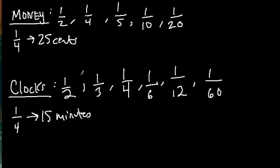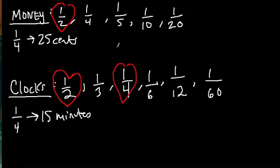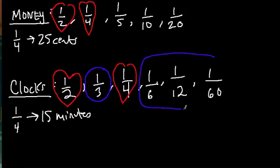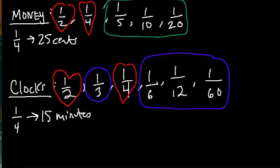What we should highlight are which ones work particularly well in the clocks but not in the money and vice versa. A half works great in both money and the clock models. So does a fourth. But a third works really well with the clock model but not the money. A sixth, twelfth, and a sixtieth all work well with the clock model but not so much the money model. And then for money, a fifth, a tenth, and a twentieth work better with the money model.